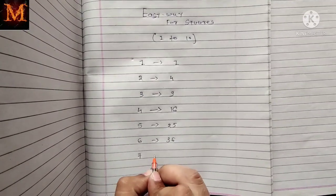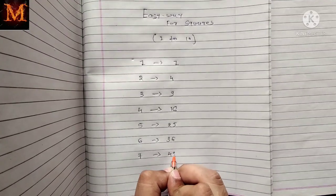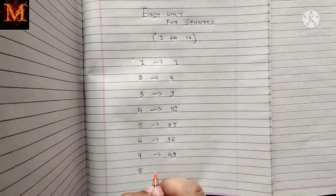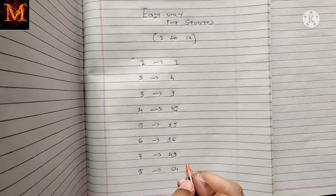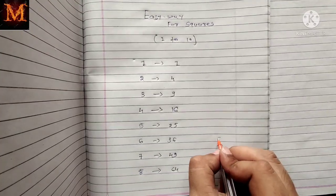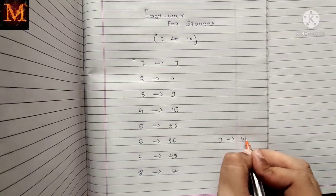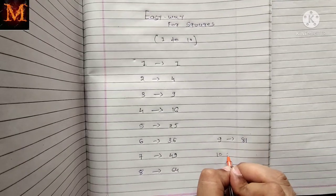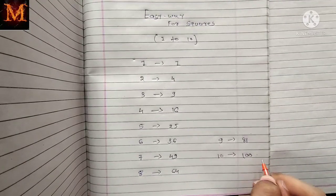Square of 7 is 49. Square of 8 is 64. Square of 9 is 81. And square of 10 is 100.